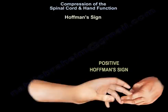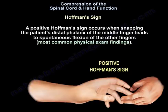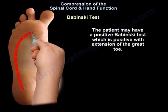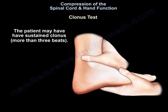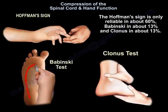The positive Hoffman sign is elicited by snapping the patient's distal phalanx of the middle finger, leading to spontaneous flexion of the other fingers — the most common physical exam finding. The patient may also have a positive Babinski test with extension of the great toe, and sustained clonus of more than three beats. The Hoffman sign is only reliable in about 60% of cases, Babinski in about 13%, and clonus in about 13%.